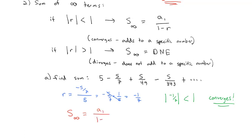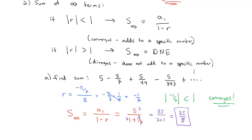We calculate the sum of those infinite terms by taking the first term, a sub 1, divided by 1 minus the ratio. The first term is 5 divided by 1 minus negative one-seventh, which makes it plus one-seventh. Multiplying everything by 7 gives 35 over 7 plus 1, and with the sevens cancelled, we have 35 over 8. Because the absolute value of the ratio is smaller than 1, this series converges and after an infinite number of terms adds up to 35 eighths.